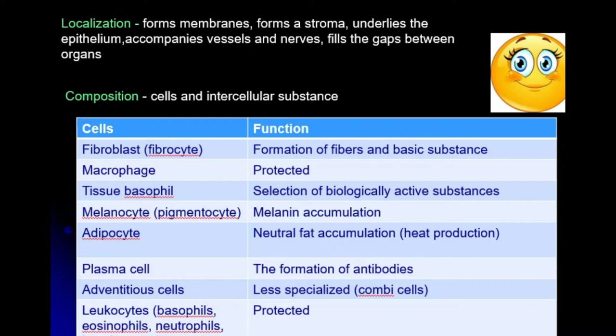All kinds of fibroblasts — from stem cell to mature fibrocyte — present a diferone. This set of different stages of one cell type is named the fibroblastic diferone. The diferone is fully present in connective tissue. Fibroblasts produce components for the ground substance and also produce components for the fibers.